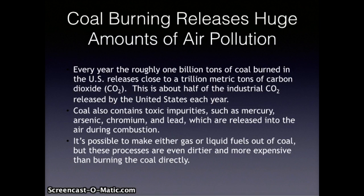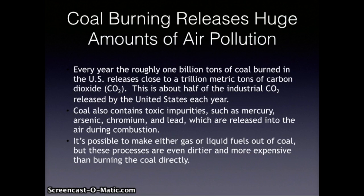The coal burned every year in the United States releases 18 million metric tons of sulfur dioxide (SO2), 5 million metric tons of nitrogen oxides (NOx), 4 million metric tons of airborne particulates, 600,000 metric tons of hydrocarbons and carbon monoxide, and 40 tons of mercury. This represents about three-quarters of the sulfur dioxide and one-third of the nitrogen oxides released by the United States each year. Sulfur and nitrogen oxides combine with water in the air to form sulfuric and nitric acids, making coal burning the largest single source of acid rain in many areas.